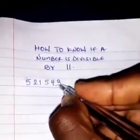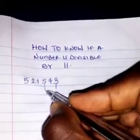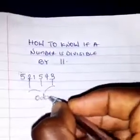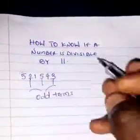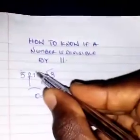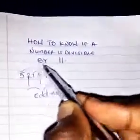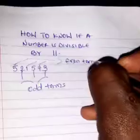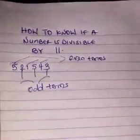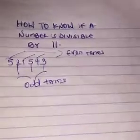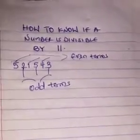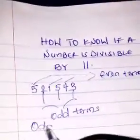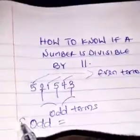The odd positions are the 1st, 3rd, and 5th digits — these are the odd positions. The even positions are likewise the 2nd, 4th, and 6th digits — these are the even positions. To know if a number is divisible by 11, the sum of the odd-position digits plus 10 times the sum of the even-position digits must be divisible by 11.